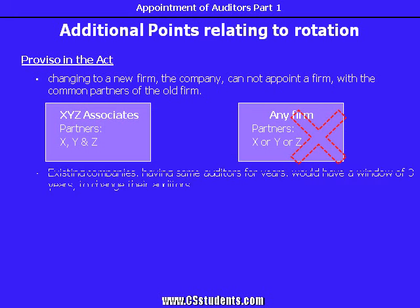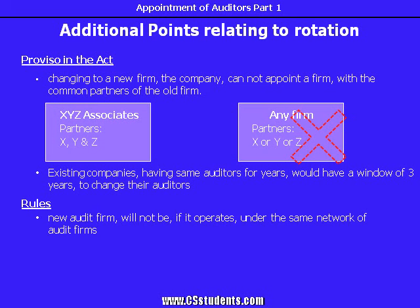Second, after the enactment of the new law, existing companies having the same auditors for years would have a window of three years to change their auditors. Certain additional points relating to rotation are provided in the rules. First, an incoming new audit firm will not be eligible for appointment if it operates under the same network of audit firms, although having different partners. Over here, same network means the firms which are operating under the same brand name, trade name, or under common control.